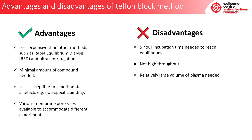Finally, some advantages and disadvantages of the Teflon block method for PPB. Advantages: it is less expensive than other methods such as rapid equilibrium dialysis and ultra-centrifugation; a minimal amount of compound is needed; it is less susceptible to experimental artefacts such as nonspecific binding; and various membrane pore sizes are available to accommodate different experiments. Disadvantages: it has a 5-hour incubation time needed to reach equilibrium; it is not high throughput; and a relatively large volume of plasma is needed.